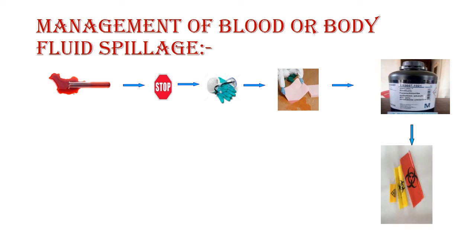Dispose of the soaked towels, gloves, mask, and apron in appropriate bags as per waste segregation policy, then wash and dry hands. If the spillage involved a blood sample whose test has not yet been done, record the incident in a blood spillage register, inform the patient, apologize for the event, and collect a fresh sample if required. These are the steps for management of blood or body fluid spillage at a laboratory workstation.